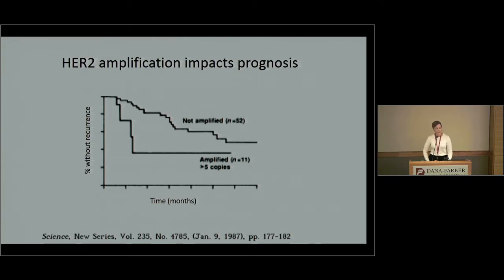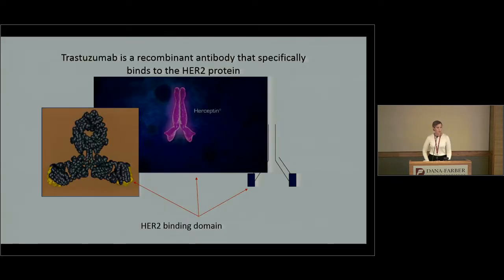They saw that patients who didn't have amplified HER2 were in the top curve — the not amplified group — and the patients with HER2 amplification were in the bottom curve. This showed a big difference in how patients did over time. So scientists thought this was something we really needed to address. After a lot of work in the lab and in clinical trials, trastuzumab was the result of that research.